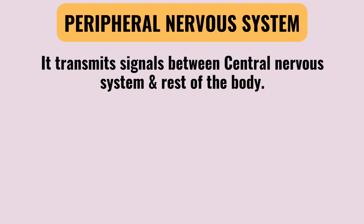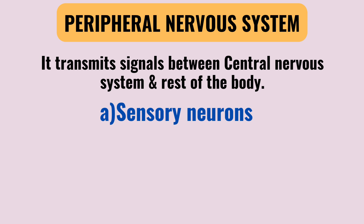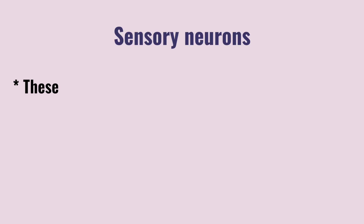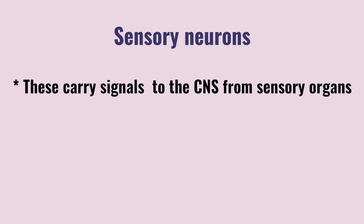Next, the peripheral nervous system, PNS. The PNS transmits signals between the CNS and the rest of the body — from the body to CNS and CNS to the body. Within the PNS, we have two types of neurons: first, sensory neurons, which carry signals to the CNS from sensory organs; second, motor neurons.